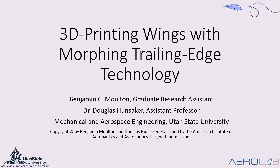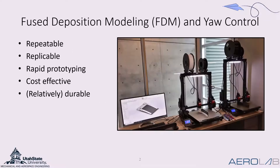Hello and welcome to my presentation on 3D printing wings with morphing trailing edge technology. My name is Ben Moulton. The purpose of this presentation is to motivate fused deposition modeling, also known as 3D printing, as a viable manufacturing method for morphing RC aircraft. This is done by presenting a morphing flying wing aircraft capable of yaw control.